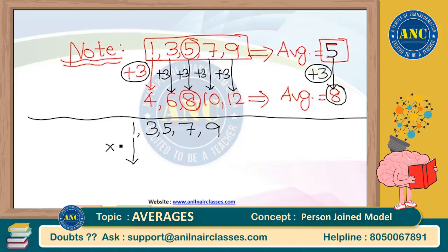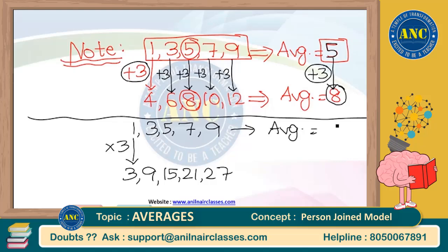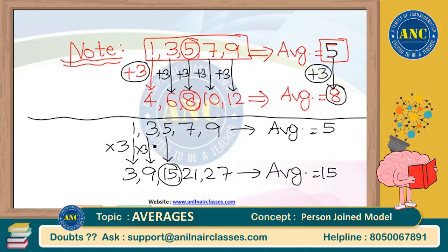Suppose if I multiply everything by 3, the new series is 3, 9, 15, 21, 27. The average of the original series is 5 and the average of the new series is 15. If I multiply each and every term by 3, my average will also multiply by 3 — 5 into 3 is 15.